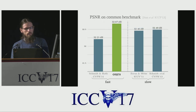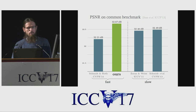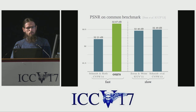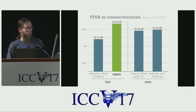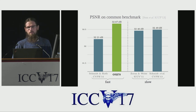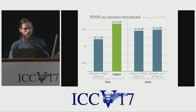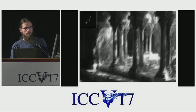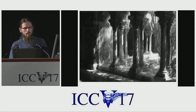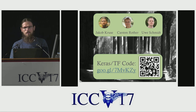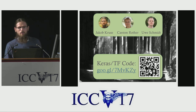Finally, this is the performance of our best model on a common de-blurring benchmark. By combining our better regularization with CNNs and our proposed boundary adjustment, we achieve a clear improvement over shrinkage fields, shown on the left. We even slightly outperform state-of-the-art methods, shown on the right, which are orders of magnitude slower than our method. Please come visit our poster number 16, or download our code. Thank you very much for your attention.